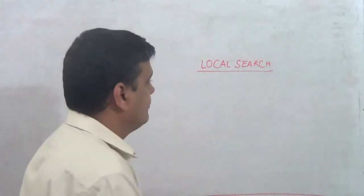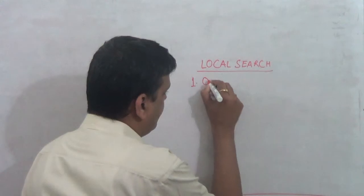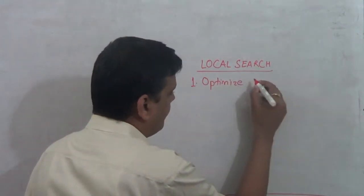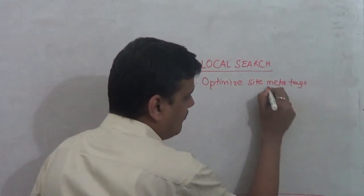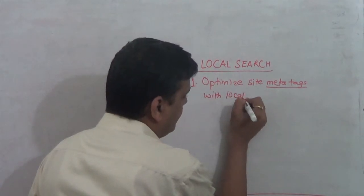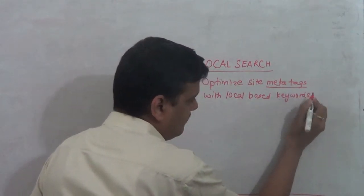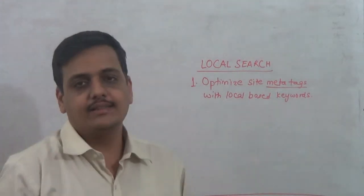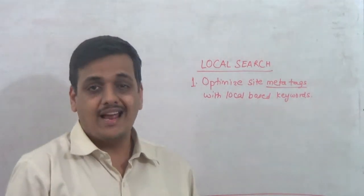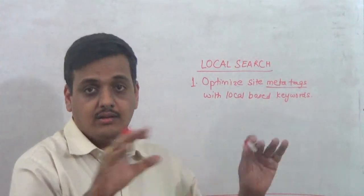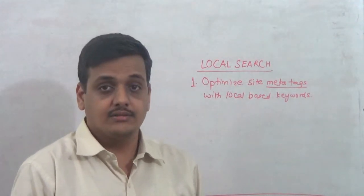Number one: Optimize site metatags with local based keywords. These could be landmarks in your place, some events going on, some important activities going around, localities, places, in and around the vicinity. Optimize your metatags for these keywords.